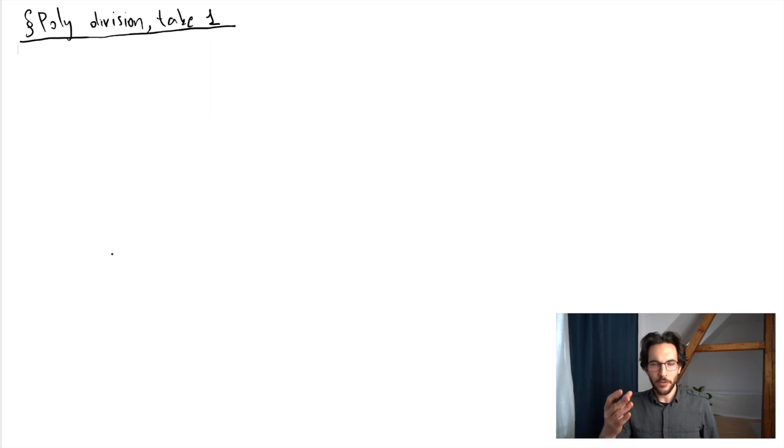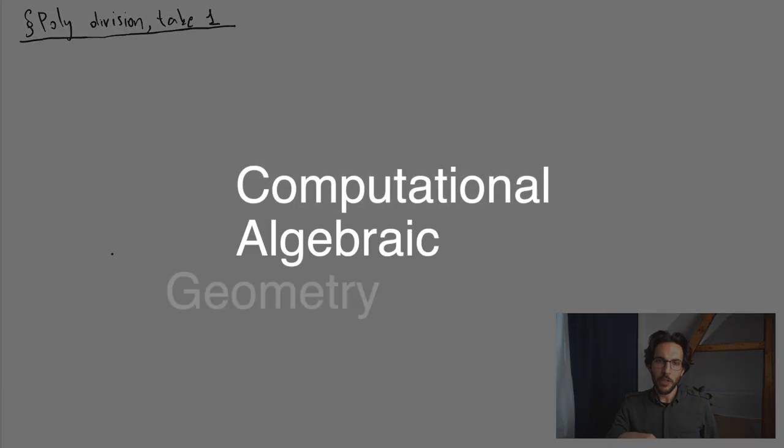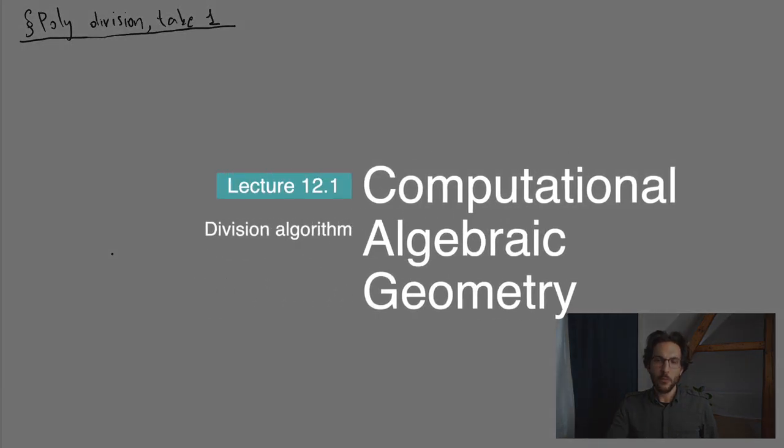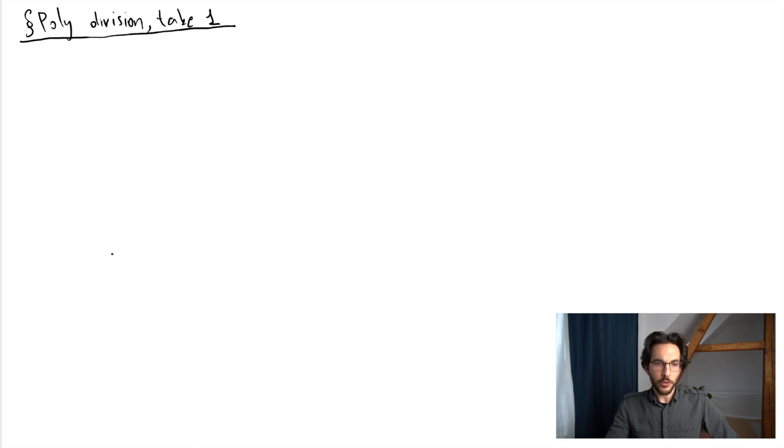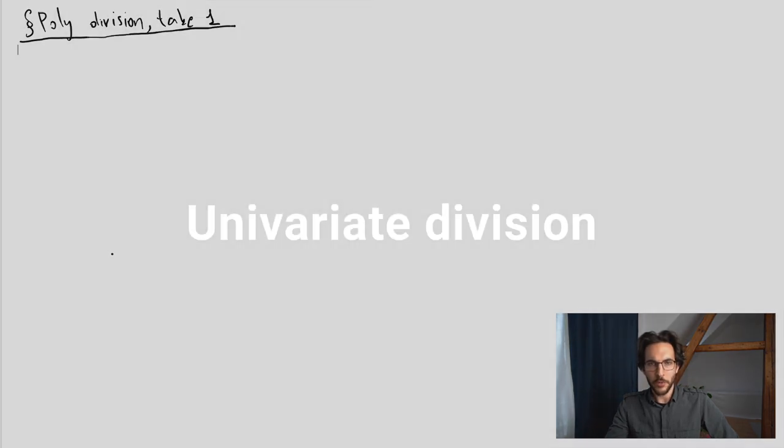Now we have everything in place to define our first polynomial division algorithm. This polynomial division algorithm will formalize what we have done at the beginning of the lecture, which was an ad hoc version of how a polynomial division should work. This will not be the end result—this is our first attempt and this will form the foundation upon which we will then finalize our polynomial division algorithm later on.